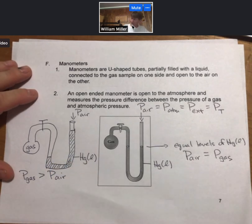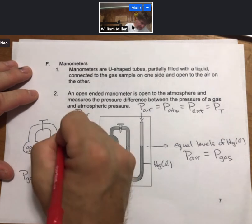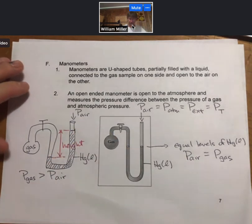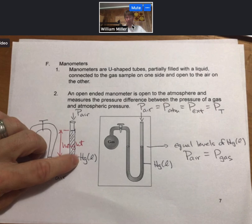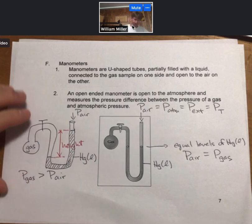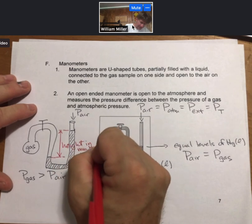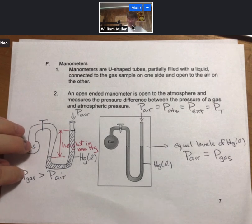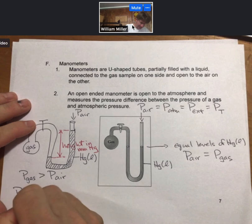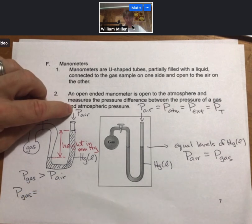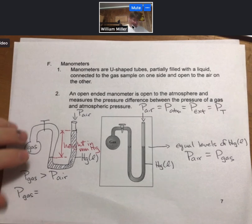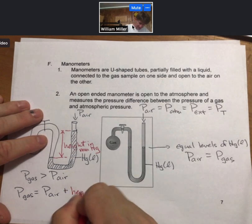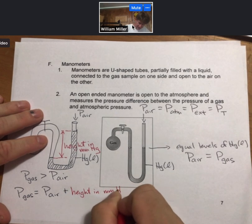And in fact, if we measure this height, since it's a height of mercury, we measure it in millimeters of mercury, we can determine the pressure of the gas precisely. The pressure of the gas is going to be equal to the pressure of the air, plus the height in millimeters of mercury.